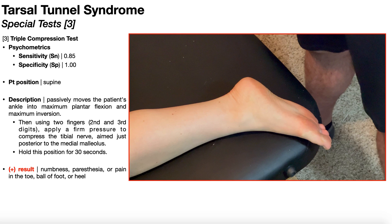The third special test is the triple compression test, which as a standalone test also has fairly strong psychometric properties. Its specificity is 100%, meaning that if you have a positive triple compression test, there's pretty much a 100% chance you have tarsal tunnel syndrome. The sensitivity is also fairly strong at 85%.